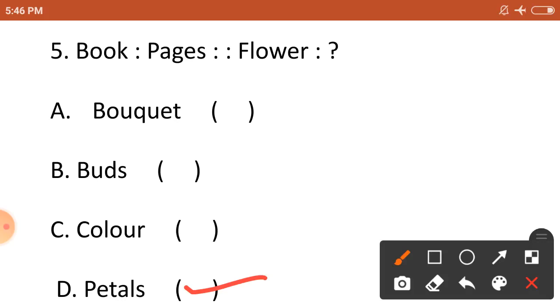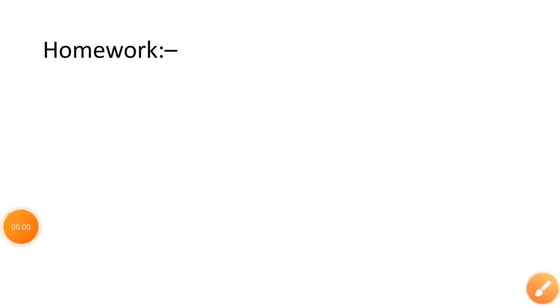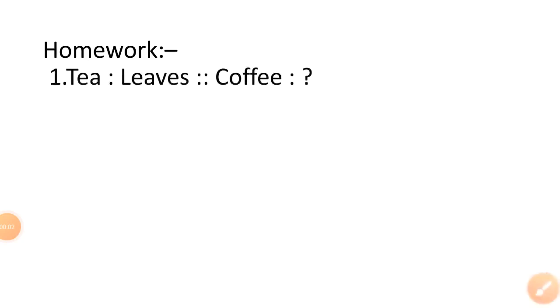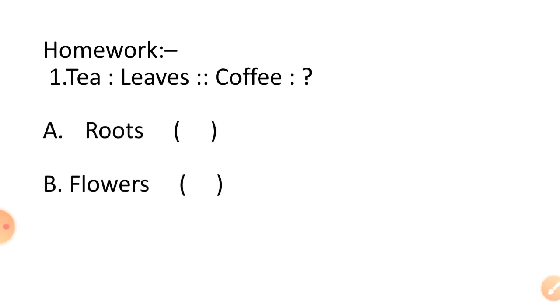Students, note down your homework. Question 1: tea is related to leaves. To which option is coffee related? Option A roots, option B flowers, option C bark, and option D seeds.